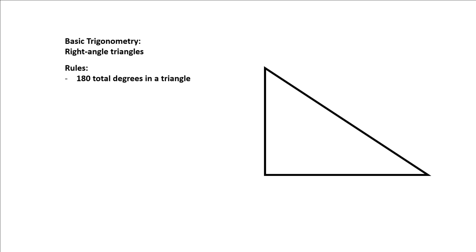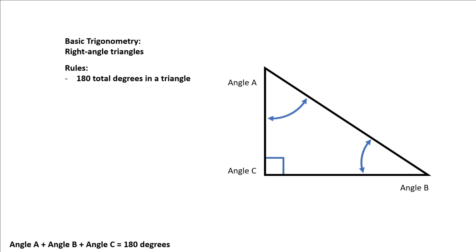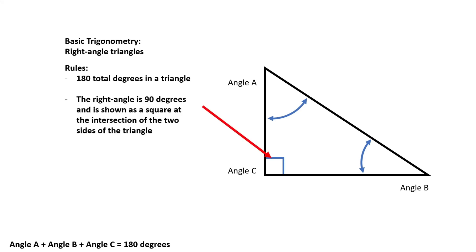The first rule is an absolute: there are only ever 180 degrees in any triangle. That includes the right angle triangle, so angle A, angle B, and angle C, if we add these up, they will equal 180 degrees. A second rule about right angle triangles is that the right angle is 90 degrees, so the right angle accounts for half of the 180 degrees in this triangle.